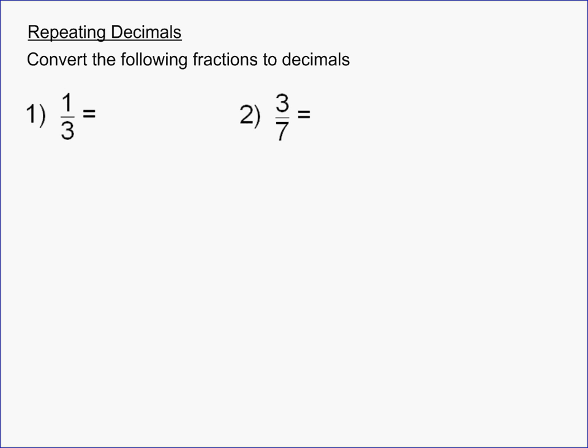So the first one is a very common repeating decimal, it's one-third. And the way that you do this is you go through and you do your normal division, the numerator divided by the denominator, so 3 into 1. And then we just need to add our extra zeros here.